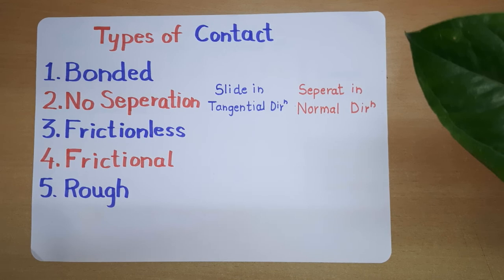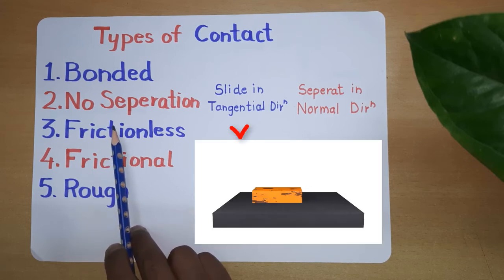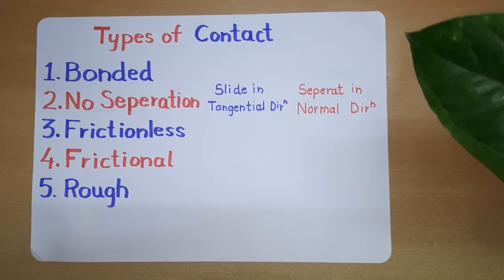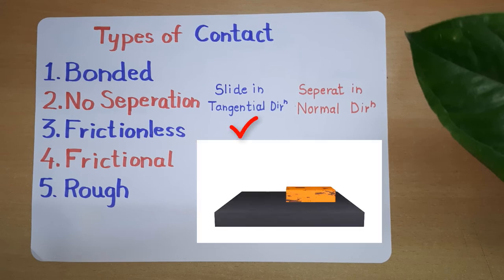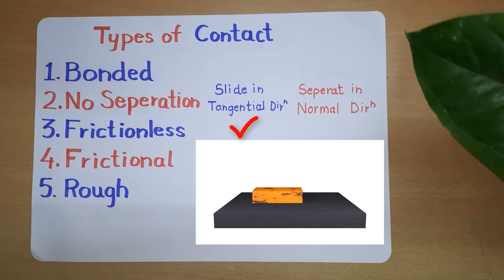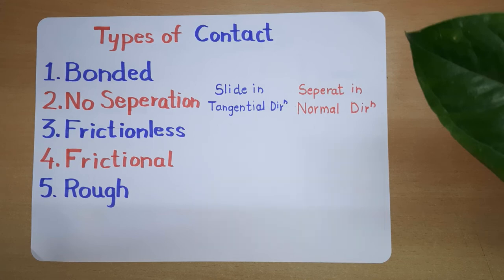The second contact is no separation. As the name indicates, it will not separate in the normal direction, but it can slide in the tangential direction without any friction. The third one is frictionless contact, meaning there is no friction when bodies slide in the tangential direction, and those bodies can also separate in the normal direction. The coefficient of friction for frictionless contact will be equal to zero.